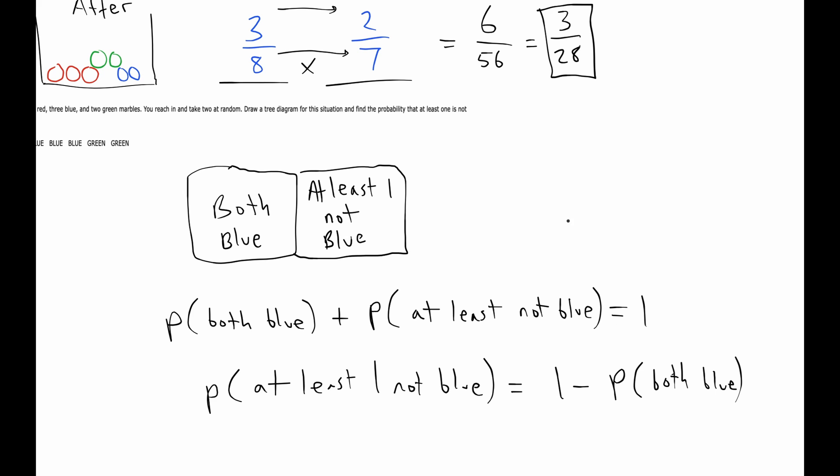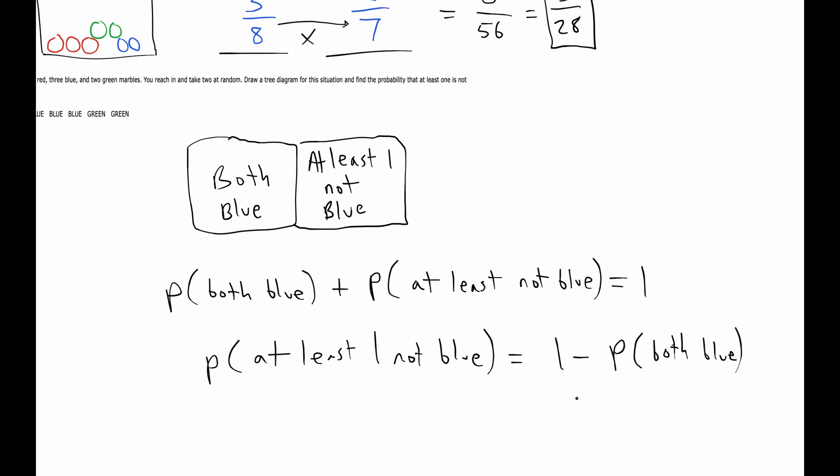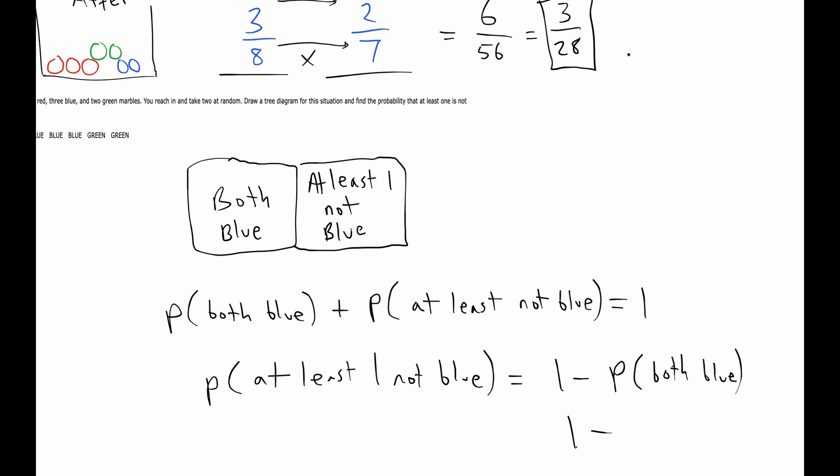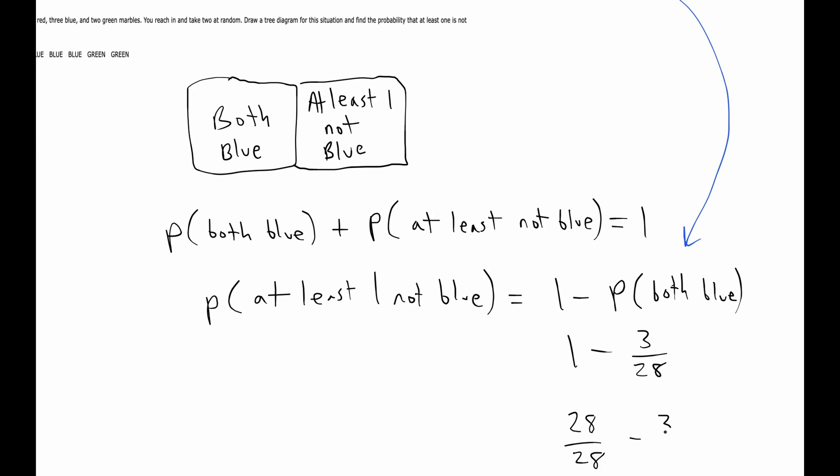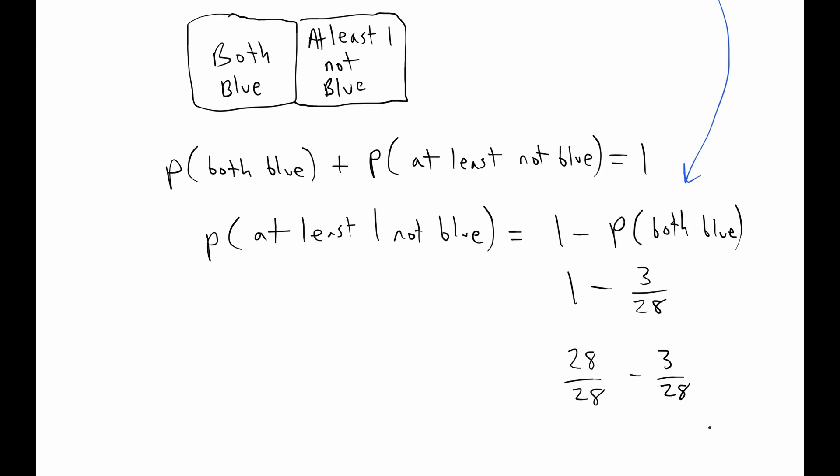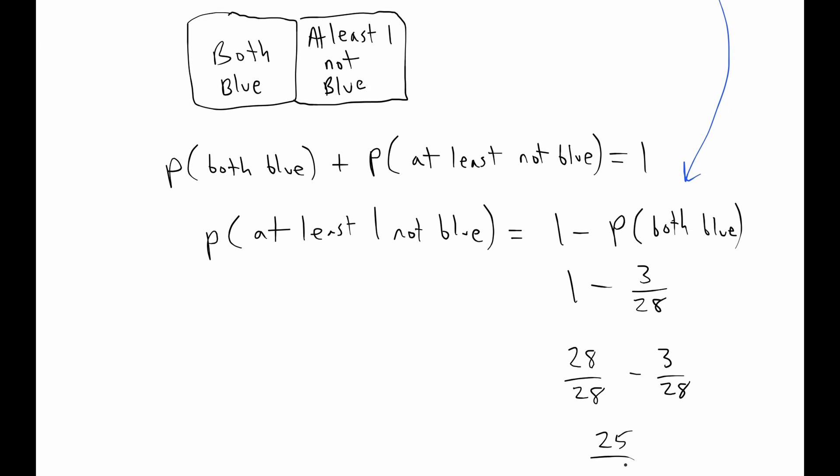So with this one there's no easy multiplication that you can do, but instead you use your result from above and you just plug it in, which makes 25 out of 28.